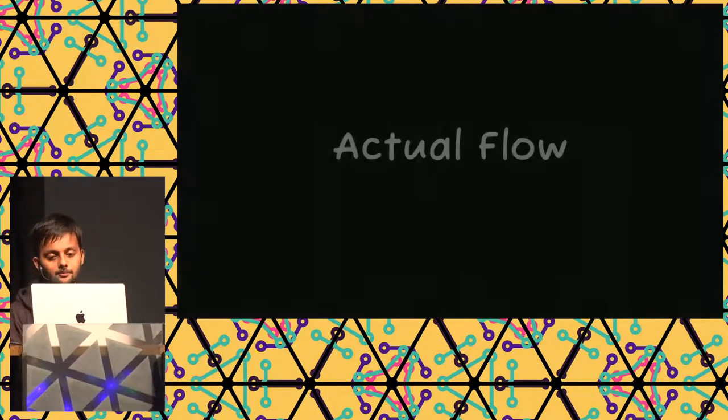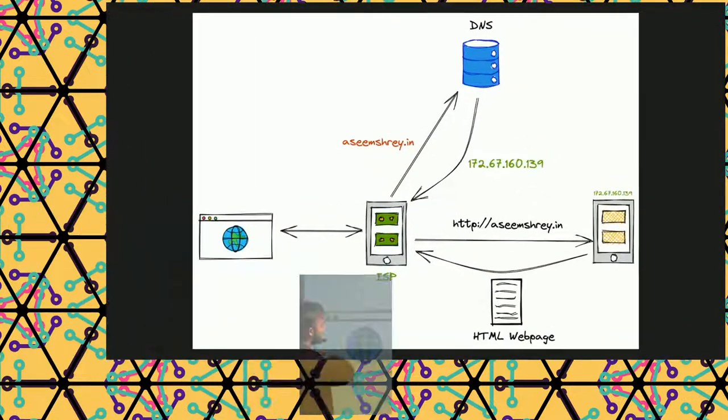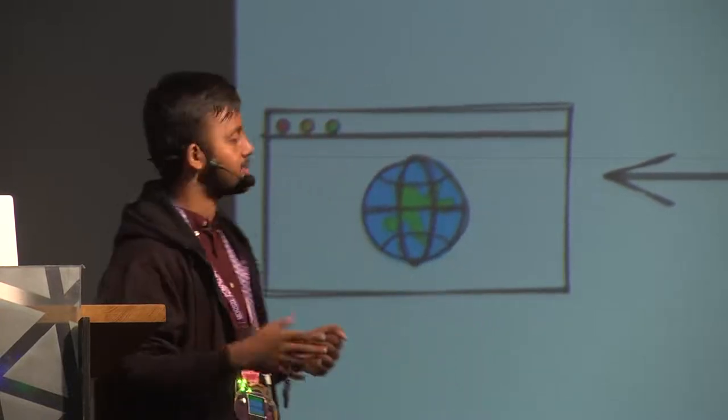Now let me show you the actual flow. You don't directly talk to the DNS or directly to the machine. There is usually an ISP in between. If you check the ISP you're currently connected to on MCH Wi-Fi, you would see something like 'Stitch' — that's the organization providing the whole internet infrastructure to this area. In India, there would be Airtel, Jio, or other mobile network providers. They are usually the internet service provider.